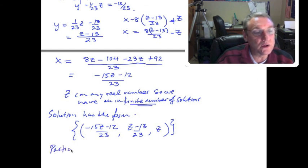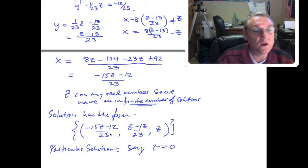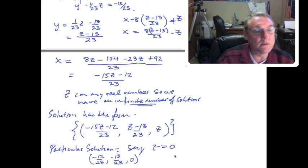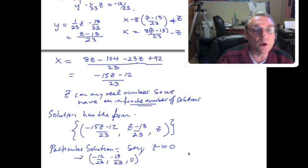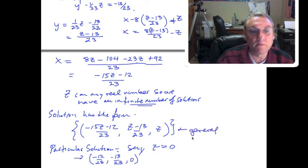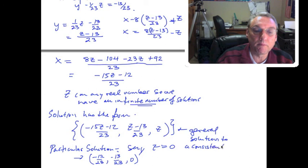Our solution has the form: x = (−15z − 12)/23, y = (z − 13)/23, and z is any real number. This is a consistent system with an infinite number of solutions. For a particular solution, if z = 0, then x = −12/23, y = −13/23, and z = 0. We can build an infinite number of points, but this shows the general solution form for a dependent system.